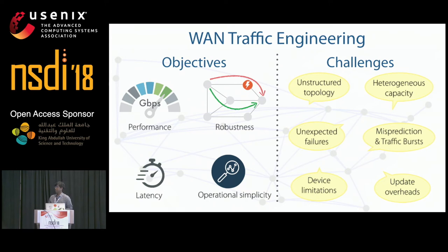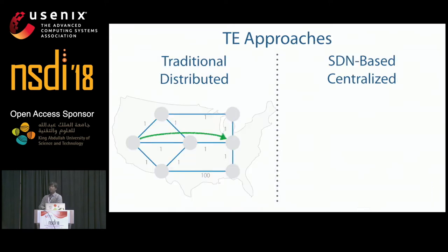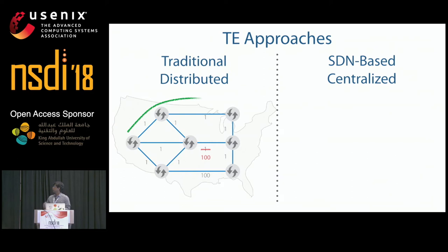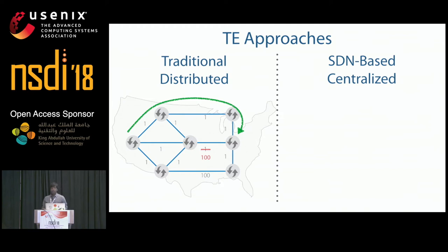The traditional approach to traffic engineering relies on tuning link weights in distributed routing protocols such as OSPF, CSPF, and ECMP, so that they compute a good set of forwarding paths. For instance, by increasing the link weight of a particular link, a network operator can steer traffic through an alternative path. This approach is simple to implement, but optimizing link weights to achieve good performance is difficult, and it often performs poorly during failures or periods of reconvergence.